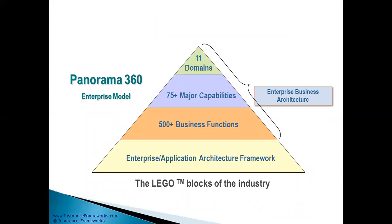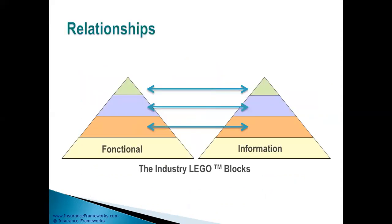Panorama 360 is a three-tiered decomposition at the enterprise model going from 11 business domains to 75 major capabilities to 500 plus functional capabilities. There's also an information model that is matched one-to-one with the functional side of the models themselves.